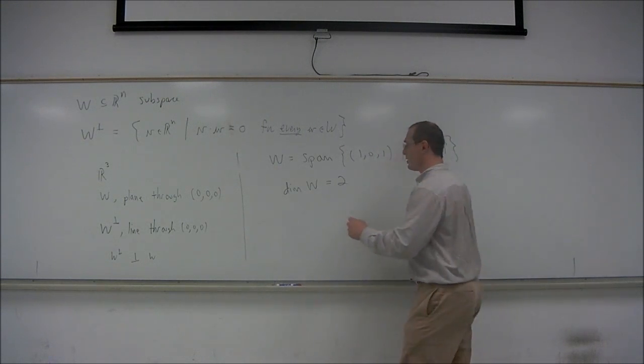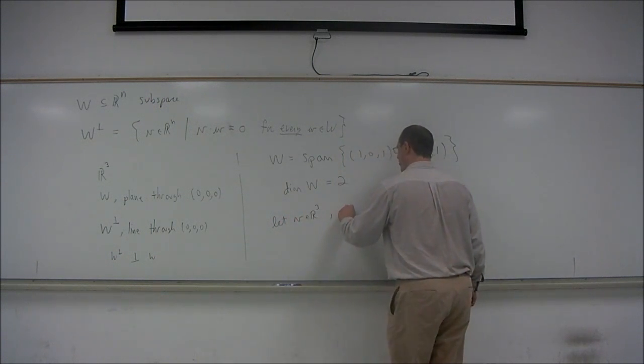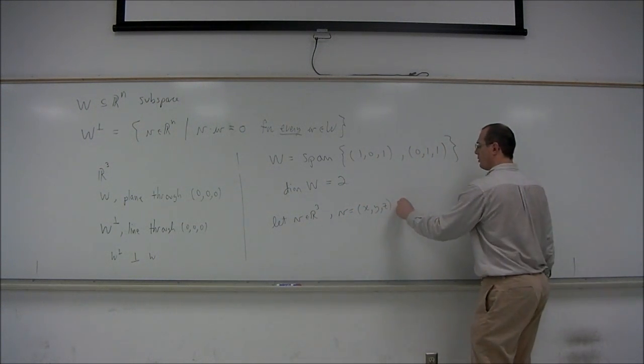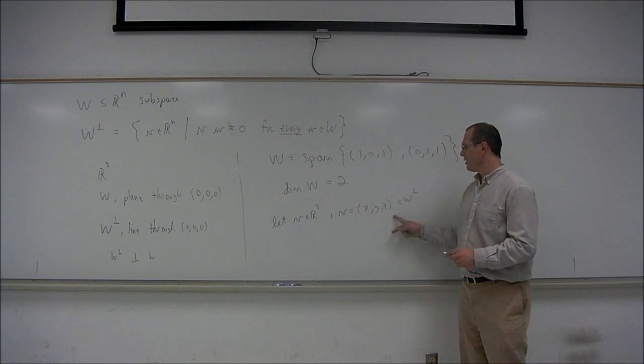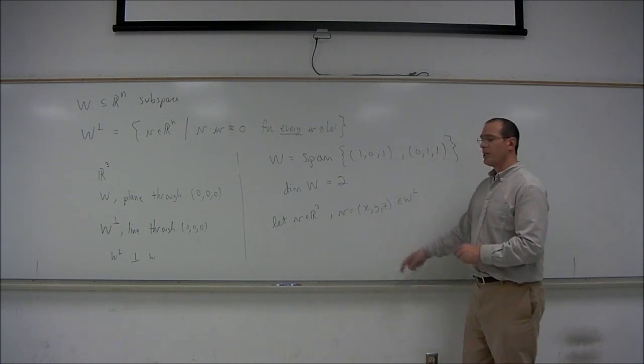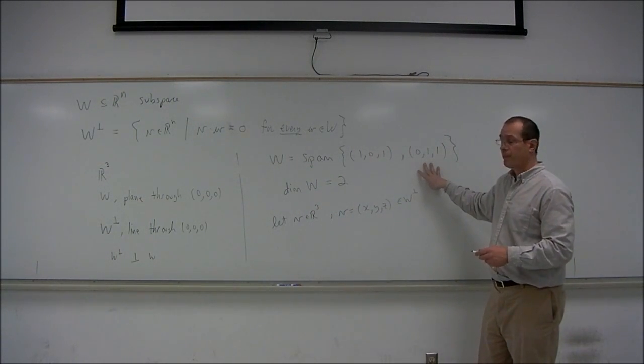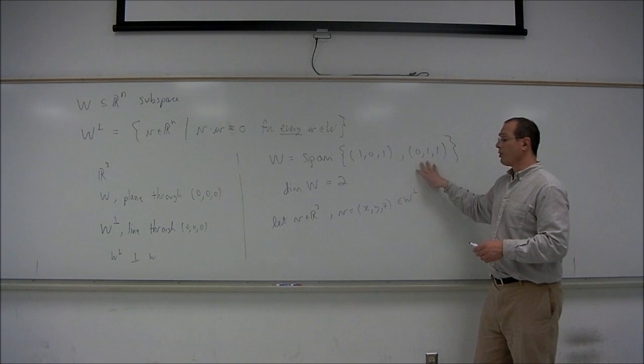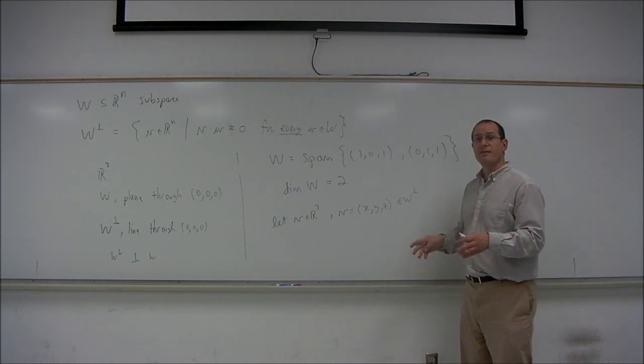To see which line exactly that is, we consider a vector V in R^3 to have the form (X, Y, Z), and we would like it to be in W perp, the orthogonal complement of W. Let's see what requirements V has to have. V has to be perpendicular to each and every vector in W. In particular, it has to be orthogonal to the basis vectors. In fact, it's sufficient that V is orthogonal to the basis vectors. In that case, it will be orthogonal to every vector in W.